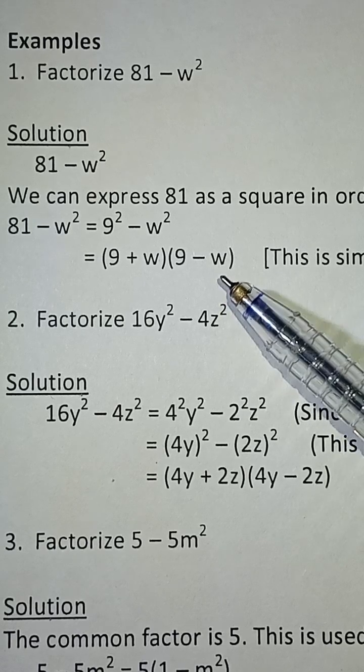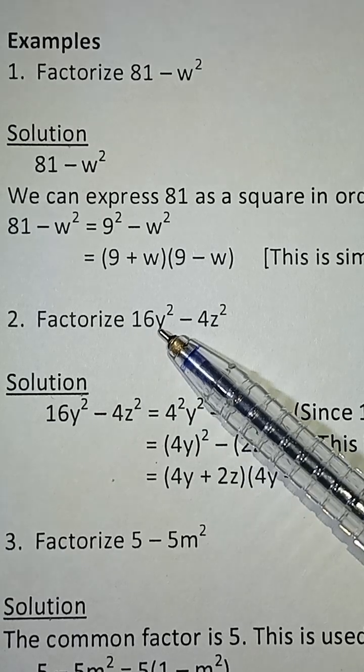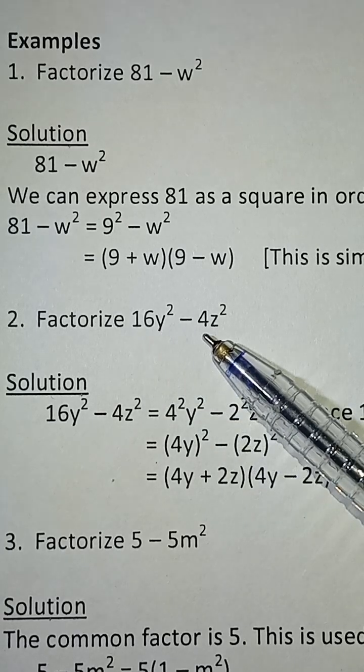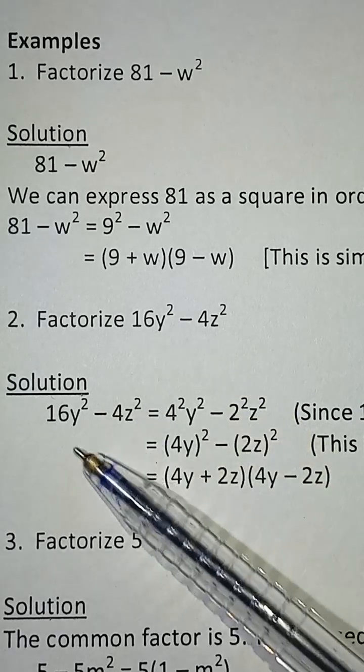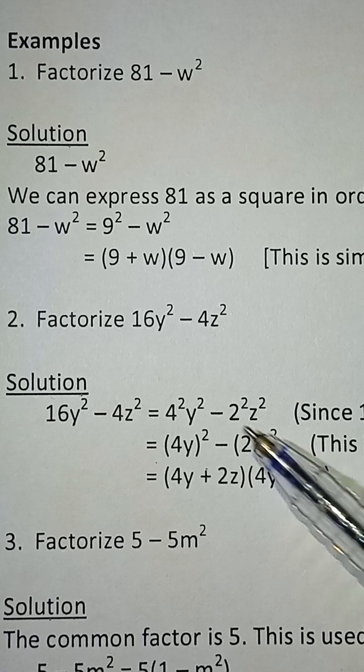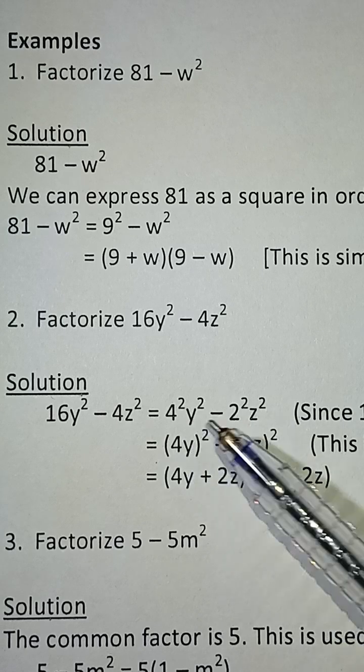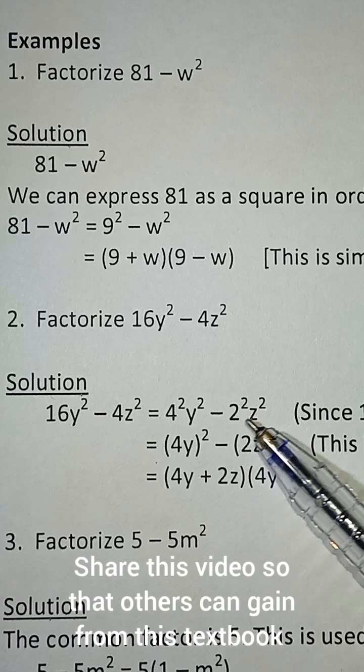The other example says factorize 16y² minus 4z². If you check this, we can express 16 as 4² and 4 as 2². So 4²y² is written as (4y)² and 2²z² is written as (2z)².